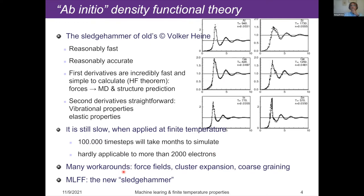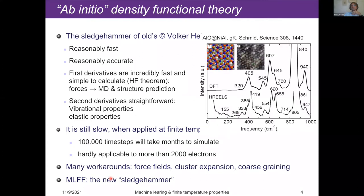Imagine wanting to do something like 100,000 time steps — even with modern computers that takes a month, maybe even a year to simulate. Also it's hardly applicable to more than around 2,000 electrons, because then cubic system-size scaling becomes really annoying. So there have been many workarounds like force fields, cluster expansion, or coarse screening. The new kit on the block is machine-learned force fields — I would call this the new sledgehammer. We are stepping up from DFT and using machine-learned force fields to accelerate calculations by another factor of 1,000, maybe 10,000.